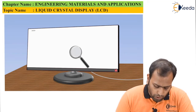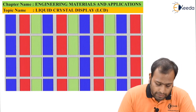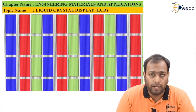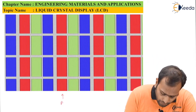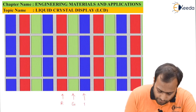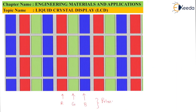If you zoom onto your computer screen, which is an LCD display, you'll come across various pixels. These are nothing but arrays of R, G and B. R stands for red, G stands for green and B stands for blue. These are the primary colors. Don't get confused with your school's definition of primary colors.